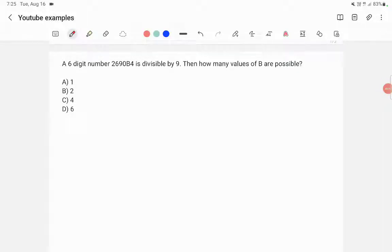A 6-digit number 2690B4 is divisible by 9. Then how many values of B are possible? So what is the divisibility rule for 9? It says that the sum of digits will be divisible by 9.